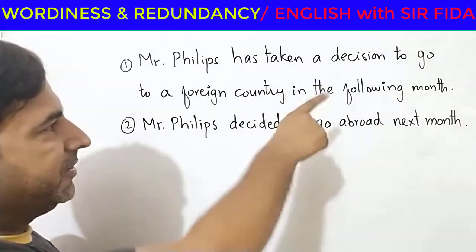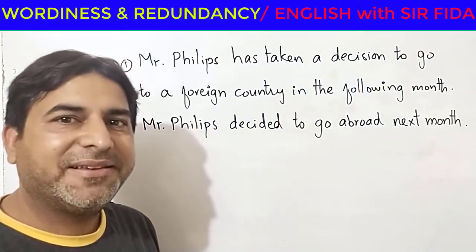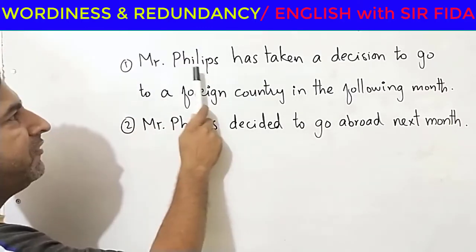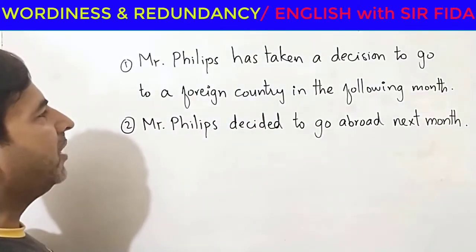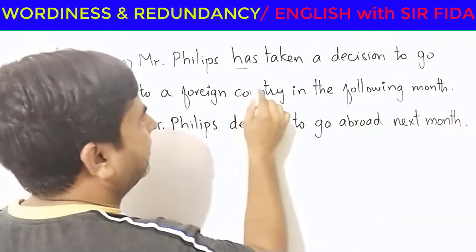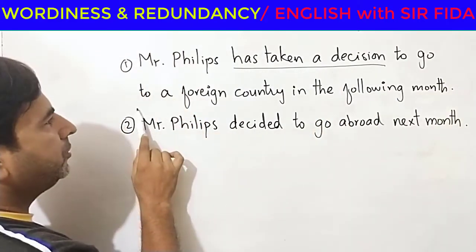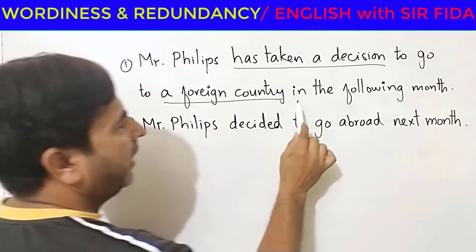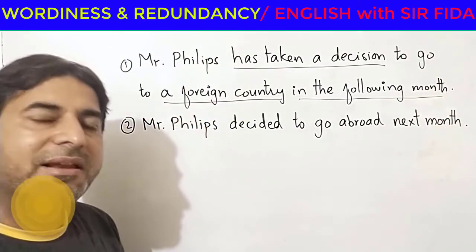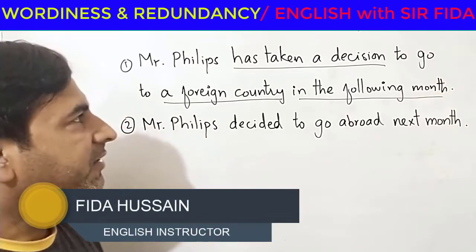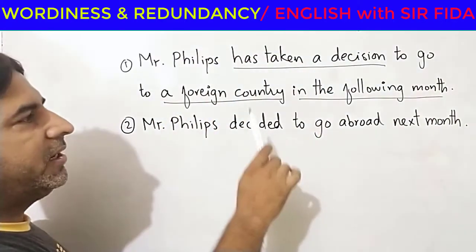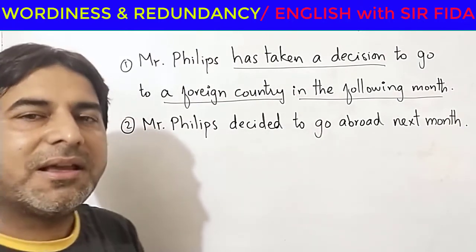Look at these two sentences. Let's read them first and then decide what you're supposed to do. Look at sentence number one: Mr. Phillips has taken a decision to go to a foreign country in the following month. I have just underlined a few parts of the sentence to make you clearly understand what the sentence stands for. Mr. Phillips has taken a decision to go to a foreign country in the following month.